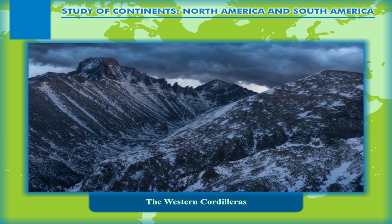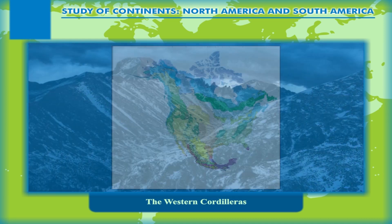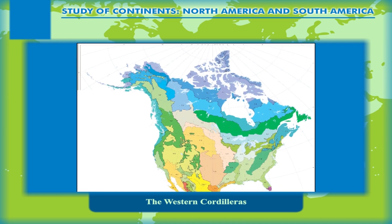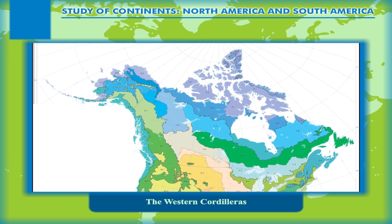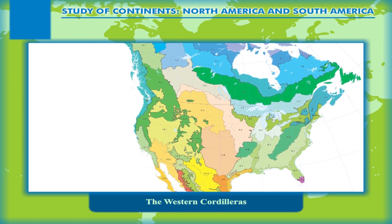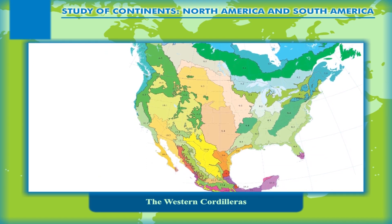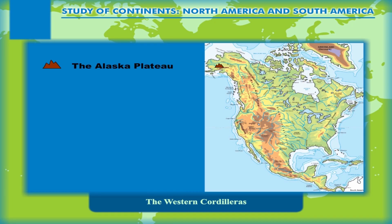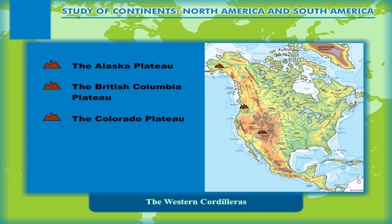To the east of the coastal ranges lie the Rocky Mountain ranges, stretching from Canada in the north to Mexico in the south. The Western Cordilleras are also a region of several intermontane plateaus: the Alaska Plateau, the British Columbia Plateau, the Great Basin, the Colorado Plateau, and the Mexican Plateau.